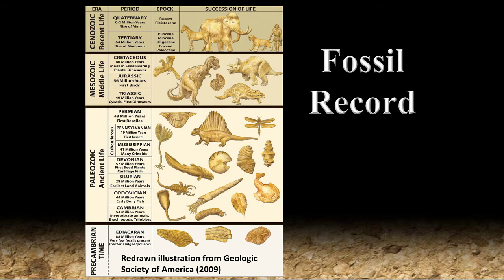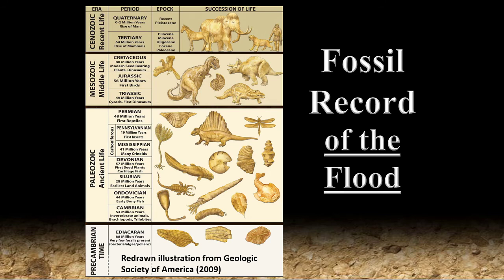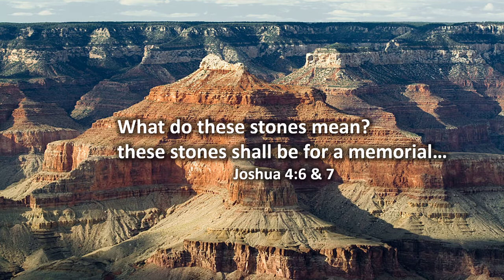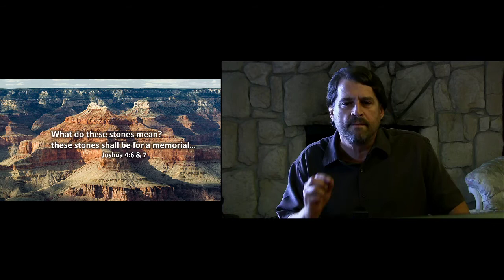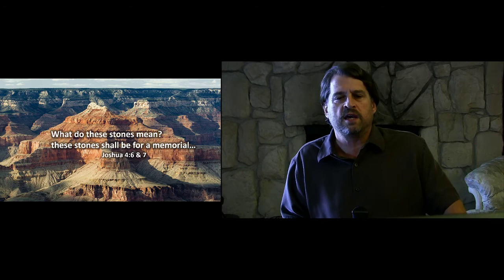Where you side on this debate may ultimately be determined by where you place your trust in authority — do you trust God's sovereign word, or man's fallible interpretations? When the fossil record is interpreted correctly, it clearly describes a terrible flood. The sorting of fossils merely represents the destruction of life zones during the global flood. The fossil record is a monumental body of evidence for this event. These layers of rocks were meant to be a memorial — a reminder of how much God hates sin.